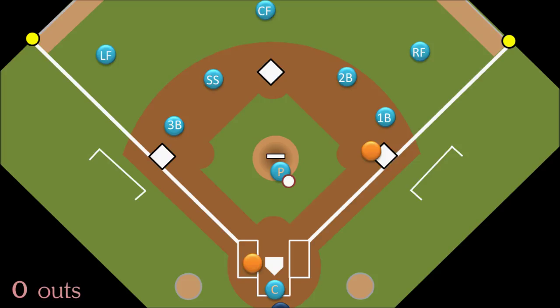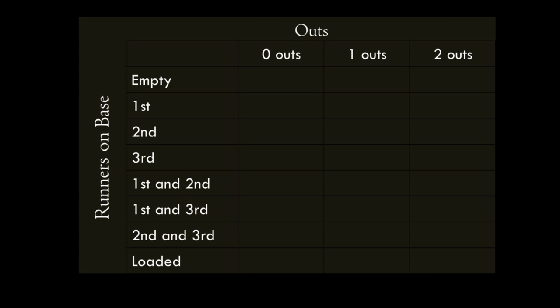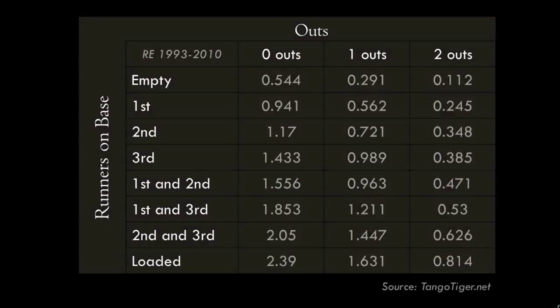Here is a chart of all 24 base states. Some really smart people have gone back through every game and found the average number of runs scored from each base state to the end of the inning. Based on that, they've created something called a run expectancy chart, which for every game from 1993 to 2010 looks like this. You can find base state charts based on different ballparks, years, or run environments — it'll be different, for example, in Colorado, where there are a lot more runs scored than in San Francisco, which is more of a pitcher's park.